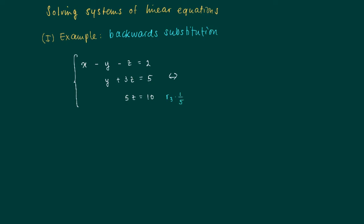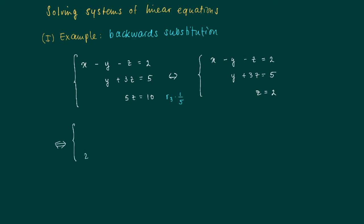You immediately see that the system is quite easy to solve. The third row, when we multiply left and right by one fifth, will change, while the other two rows remain the same. We end up stating that z equals 2. This system is equivalent to using the value z equals 2 in the first and second equations.